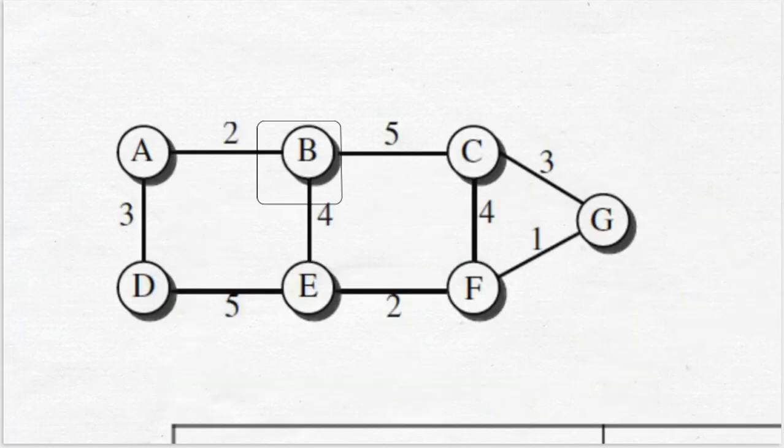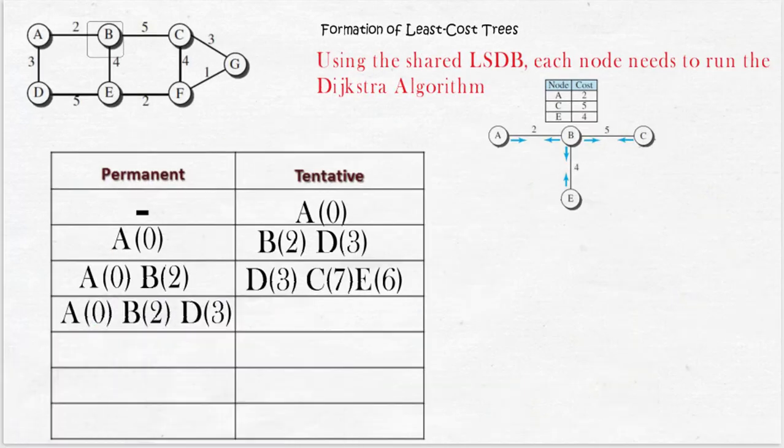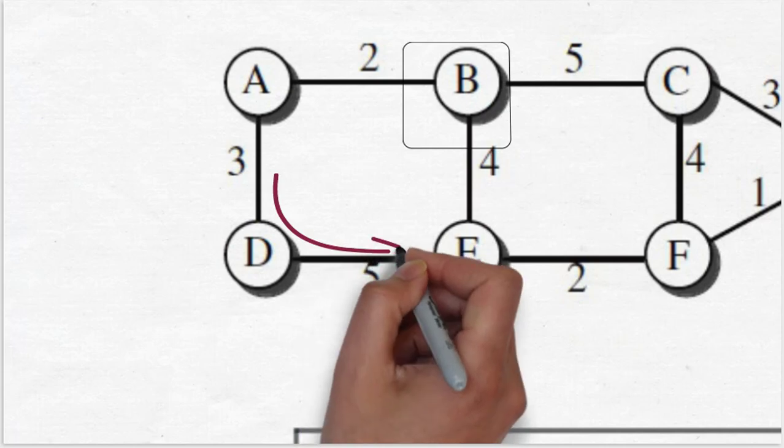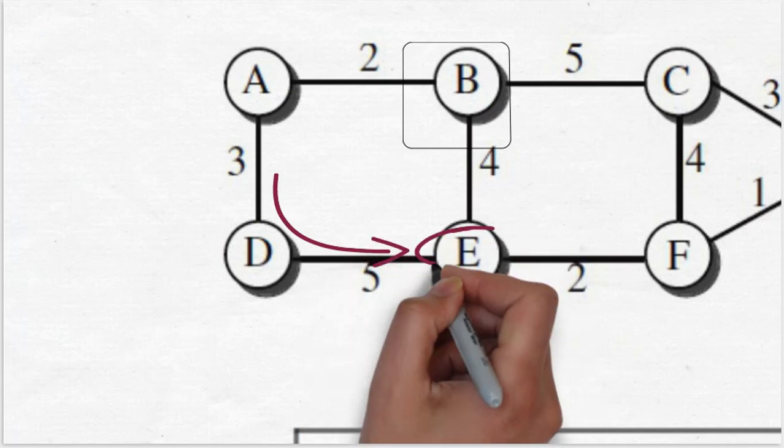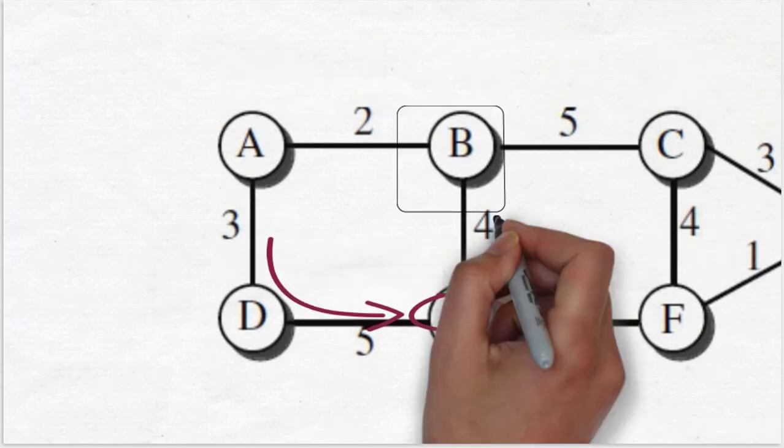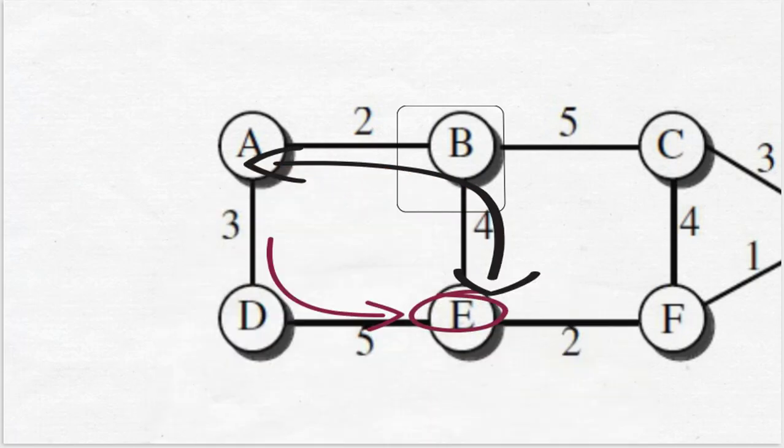Nodes C and E are now tentative, and on the whole tentative list node D has least cost and D is moved to permanent. A packet from node A can also travel through node D to reach node E, but the cost in this case is 8, which is higher than the packet traveling from node A to node E through the link B.